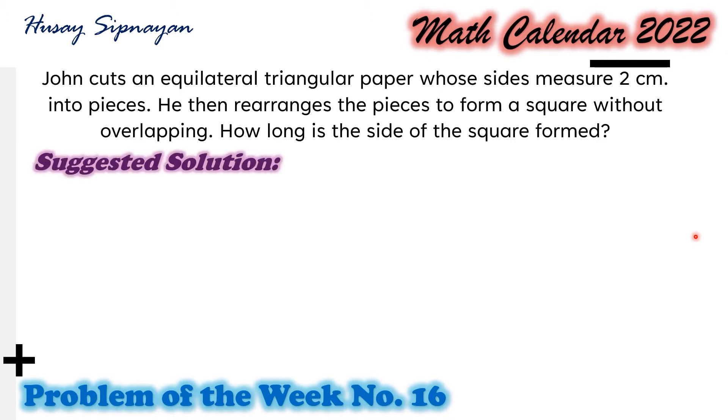Here is our suggested solution. We know that if an equilateral triangular paper is cut into pieces and then rearranged to form a square without overlapping, the original area of the equilateral triangular paper must be equal to the area of the square formed.